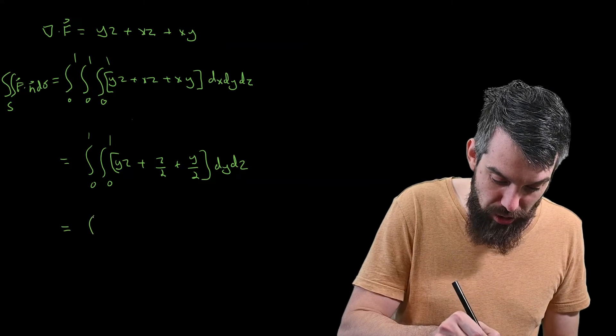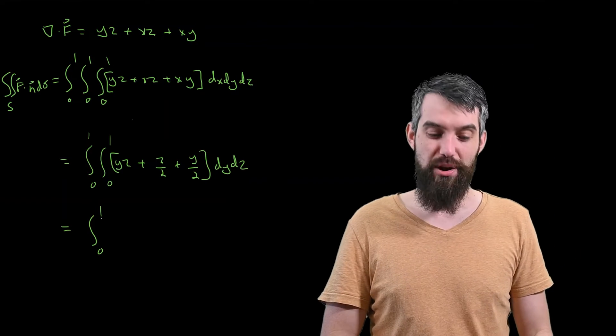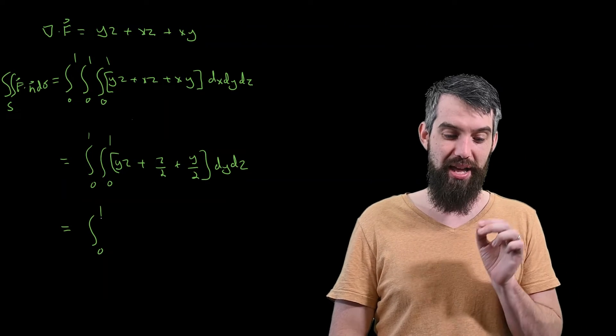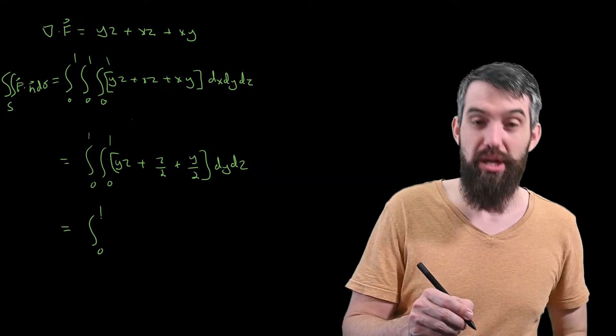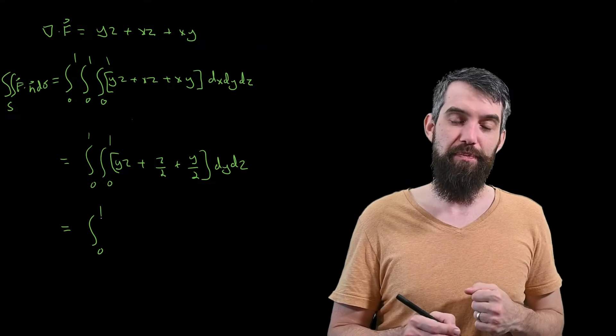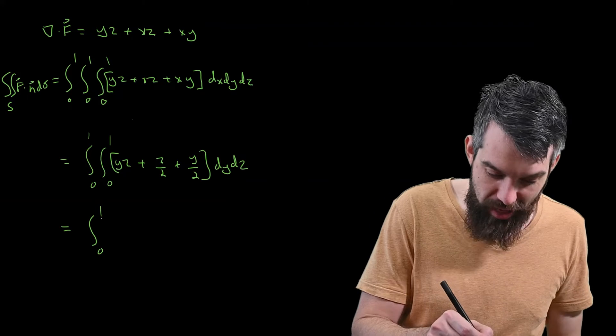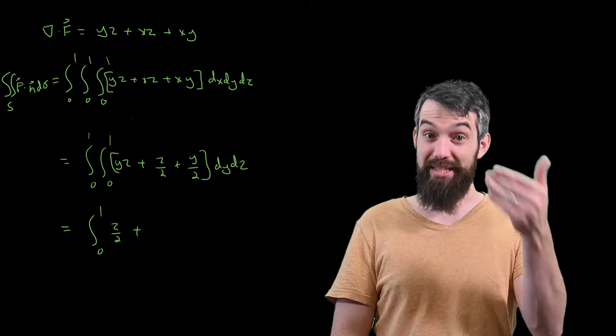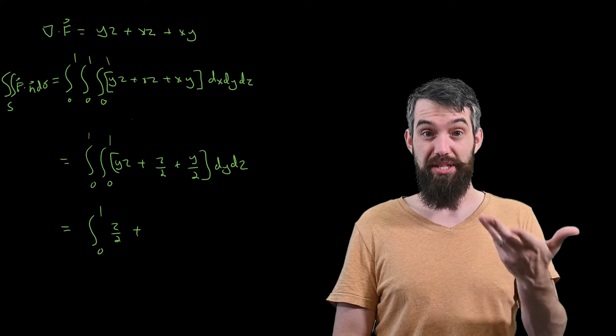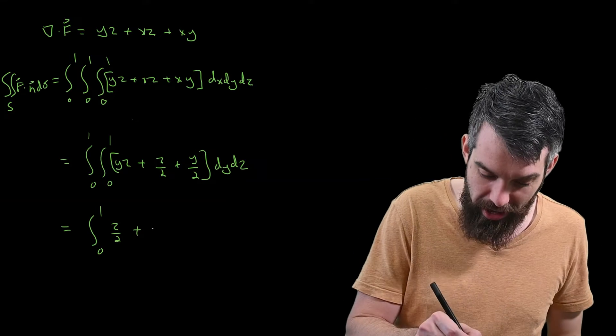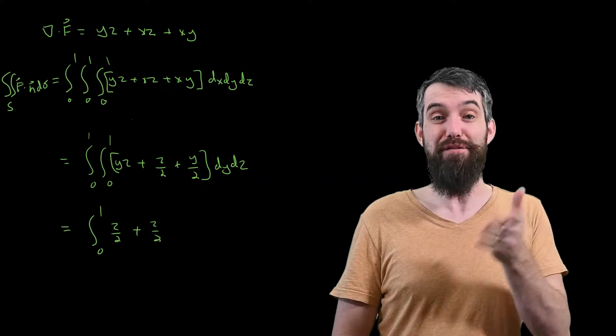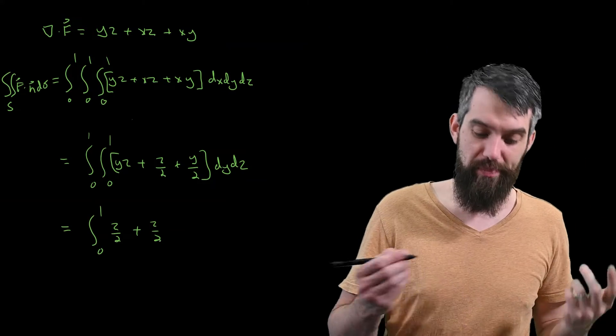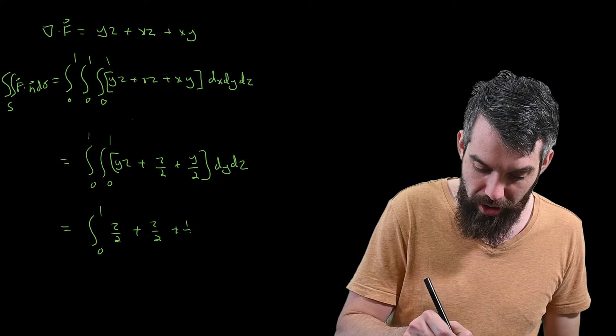Let's do the next most inner integral, so I have just the outside one remaining here. Y now is what's being integrated, so integral with respect to y. So the integral of yz becomes y squared over 2 times z, plug in 0 and 1 into that, and I'm going to get z divided by 2. Then, z divided by 2 integrates to z divided by 2 times y, plug in the 0 and 1, I just get z divided by 2. And then the final term is y over 2 integrates to y squared over 4, plug in the 0 and the 1, and I'm going to get a 1 quarter.